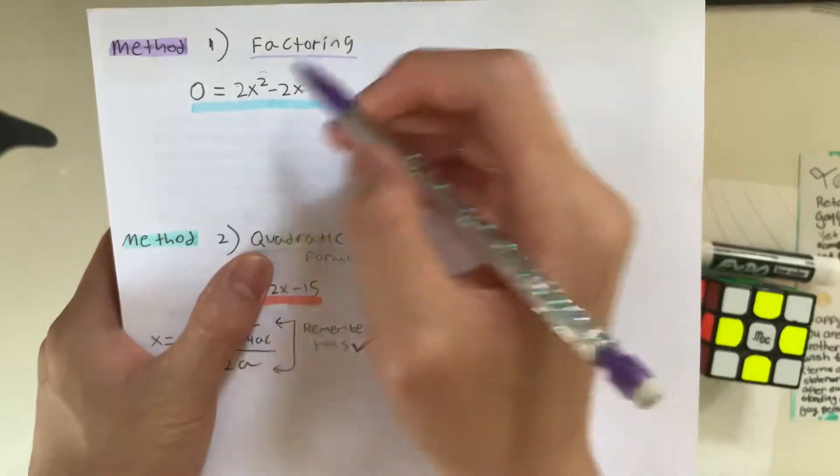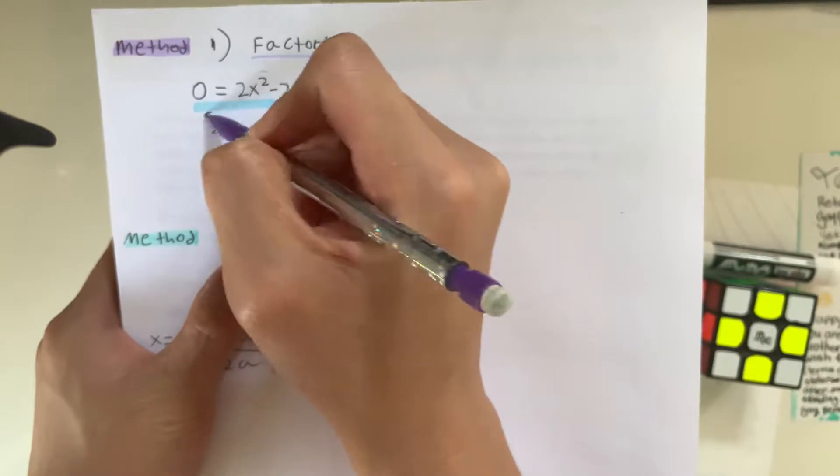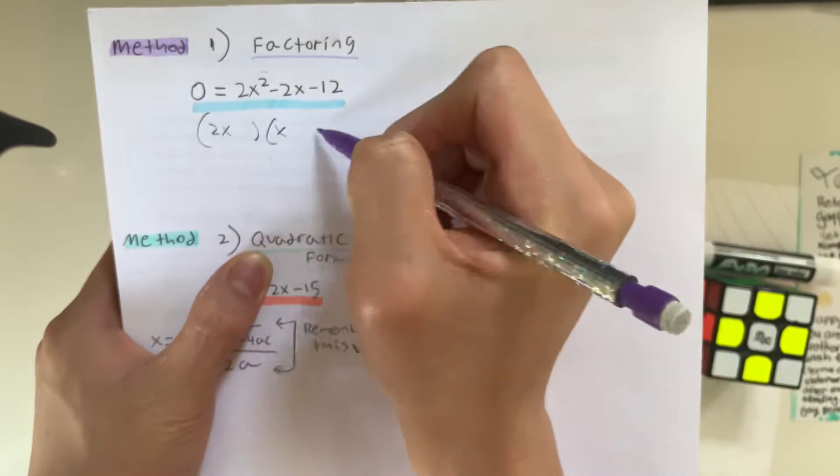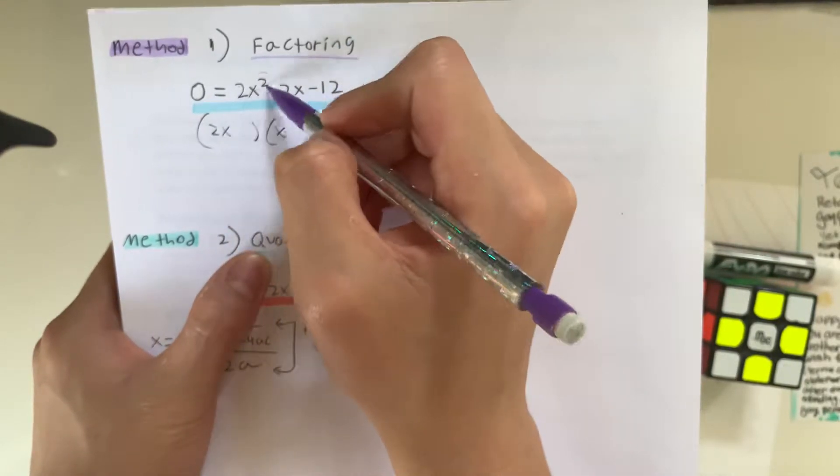So, how are you going to factor this? That's equal to 2x times x, right, because 2x times x is equal to 2x squared.